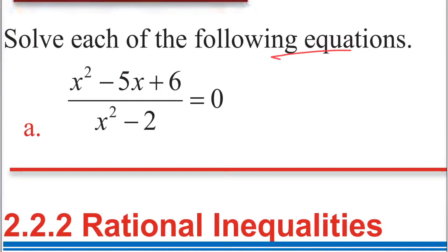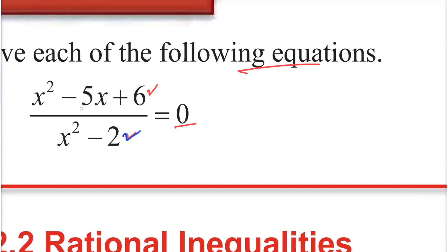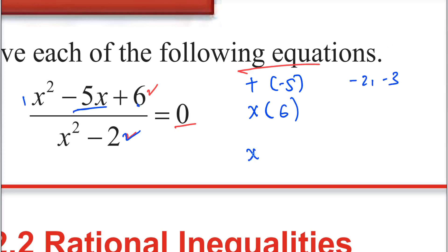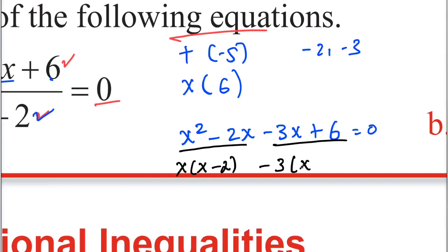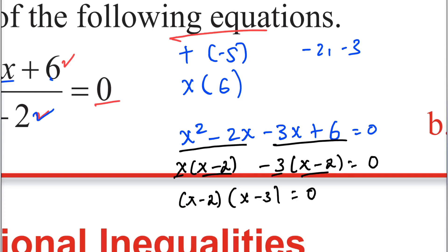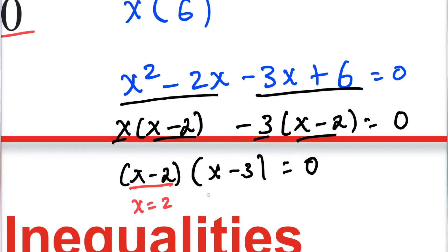The denominator is zero when x plus 3 equals zero, so x equals negative 3, and when x minus 3 equals zero, so x equals 3. Therefore x is different from negative 3 and different from 3 — these make the expression undefined. Factoring x squared minus 5x minus 2x minus 3x plus 6 equals zero, we get x equals 2 and x equals 3.